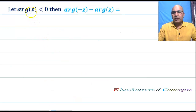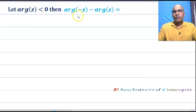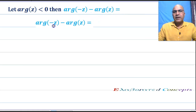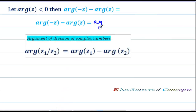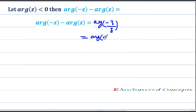In the next problem, argument of z is less than 0, which means z cannot be equal to 0. Now argument of minus z minus argument of z equals argument of minus z upon z, using properties of argument. This is equal to argument of minus 1, which equals π.